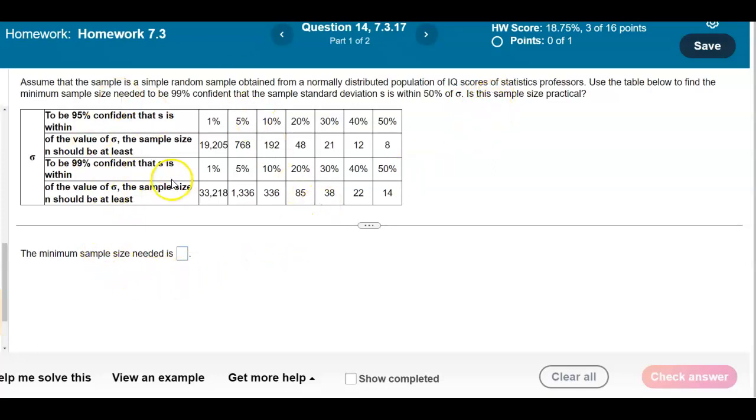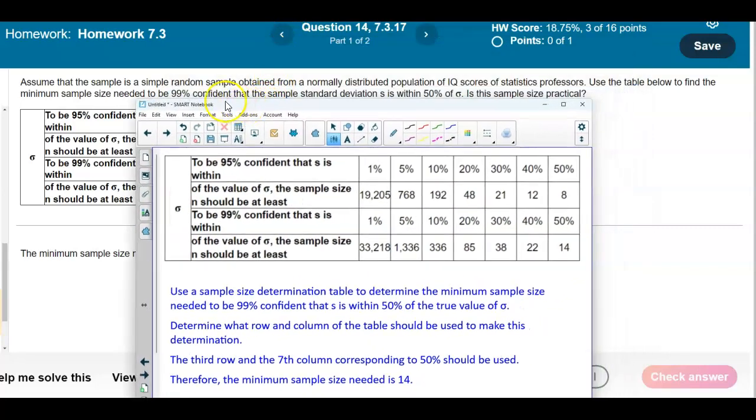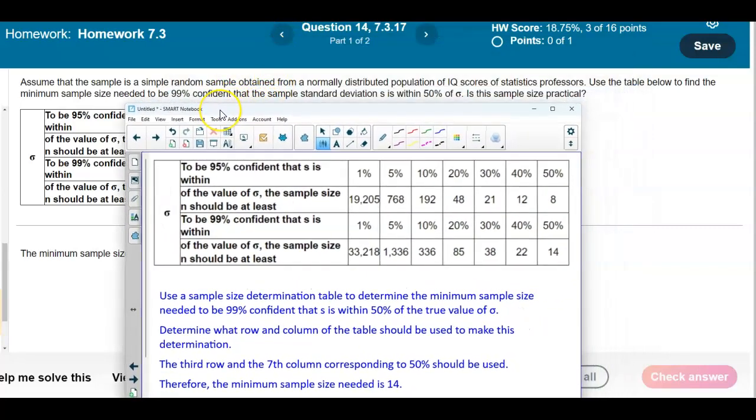We're going to use this table here to find the minimum sample size needed. Here's the table. The question is asking for 99% confidence in the sample standard deviation.